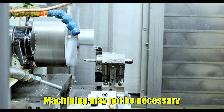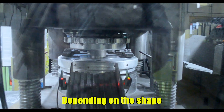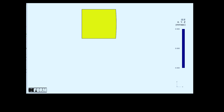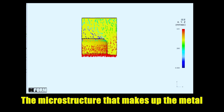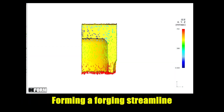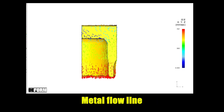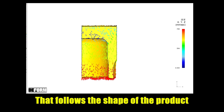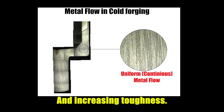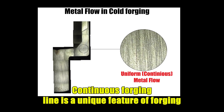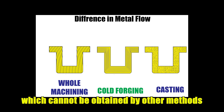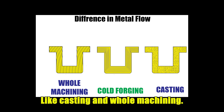It is also excellent in net shape — machining may not be necessary depending on the shape. Increases strength: the microstructure that makes up the metal is crushed and stretched during forging, forming a forging streamline — a metal flow line that follows the shape of the product — increasing toughness. This continuous forging line is a unique feature of forging which cannot be obtained by other methods like casting and hole machining.